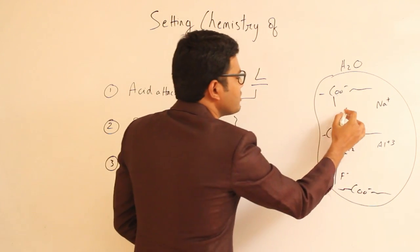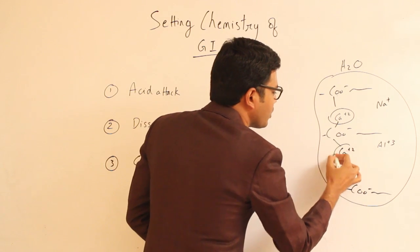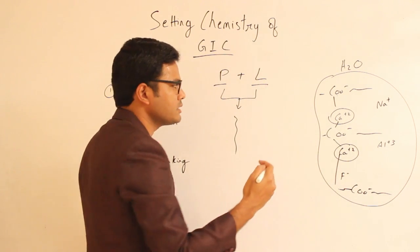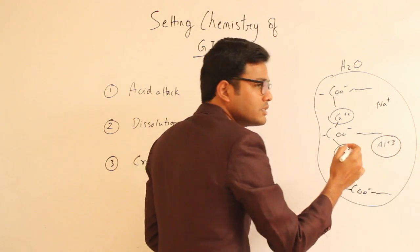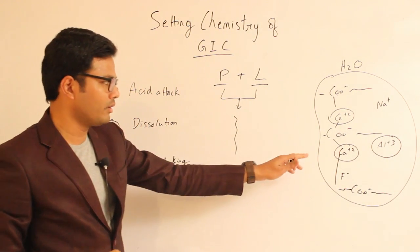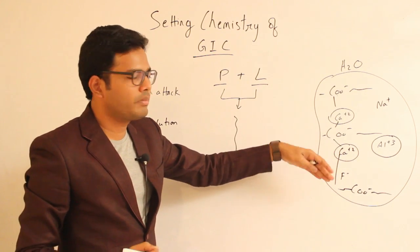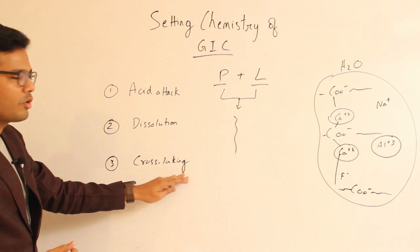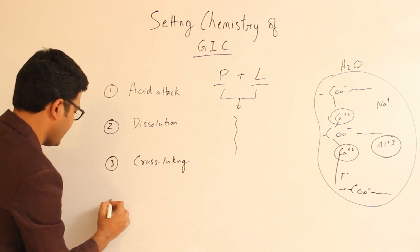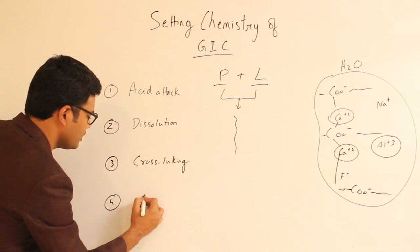Initially, this cross-linking happens with calcium ions, but within 24 hours these calcium ions are replaced by aluminum ions. This is very important. We need to keep that in mind. So within 24 hours, calcium ions are replaced by aluminum ions. This is the cross-linking phase.